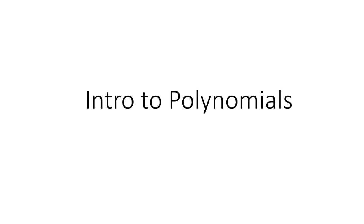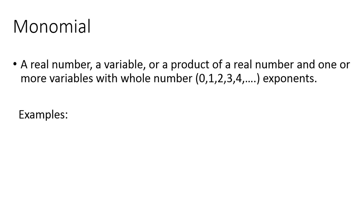In this video you are going to be receiving an introduction to polynomials. First, we have a monomial. A monomial is a real number, a variable, or a product of a real number and one or more variables with whole number exponents. Remember, a whole number is 0, 1, 2, 3, 4, etc. — not negative numbers. Some examples of monomials include 12, y, negative 2y squared, 3.26xy to the fifth, and x over 2.